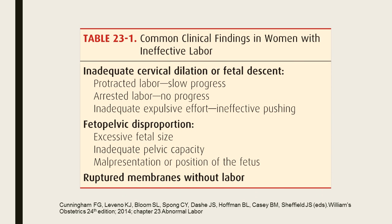Common clinical findings in women with ineffective labor include: inadequate cervical dilatation or fetal descent, which may present as protracted labor, arrested labor, or inadequate expulsive effort by the mother; fetopelvic disproportion secondary to excessive fetal size, inadequate pelvic capacity, or malpresentation; and ruptured membranes without labor.